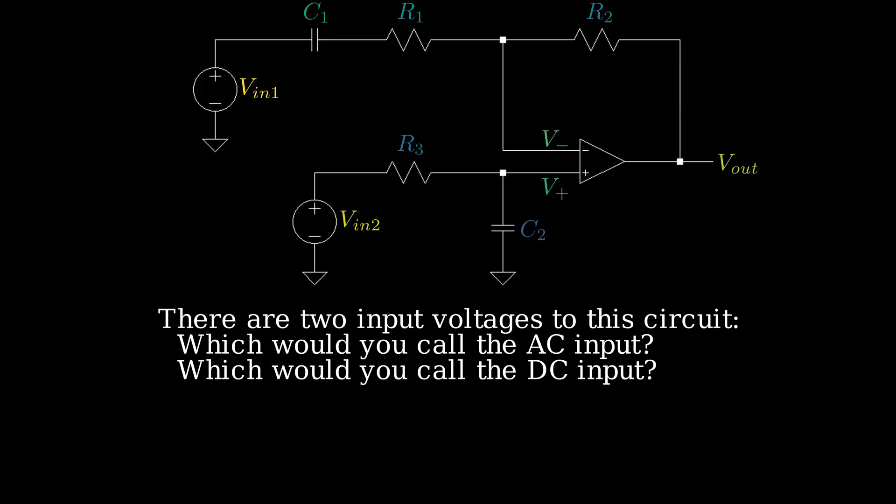The answer to this question lies in C1. In this topology, it is commonly referred to as an AC coupling capacitor. If VIN1 was a DC voltage source, it could never contribute to Vout due to C1. Thus, VIN1 is the AC input, and VIN2 is the DC input.